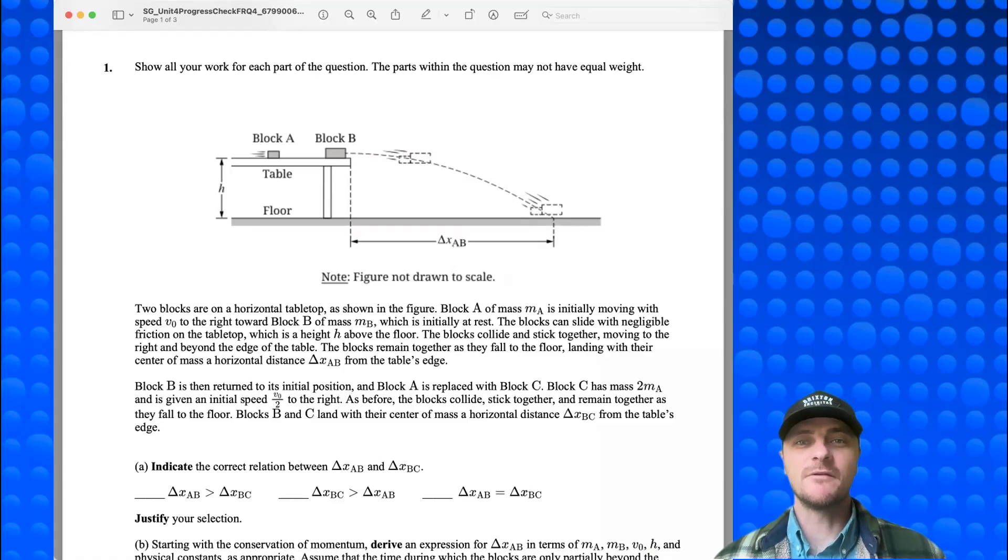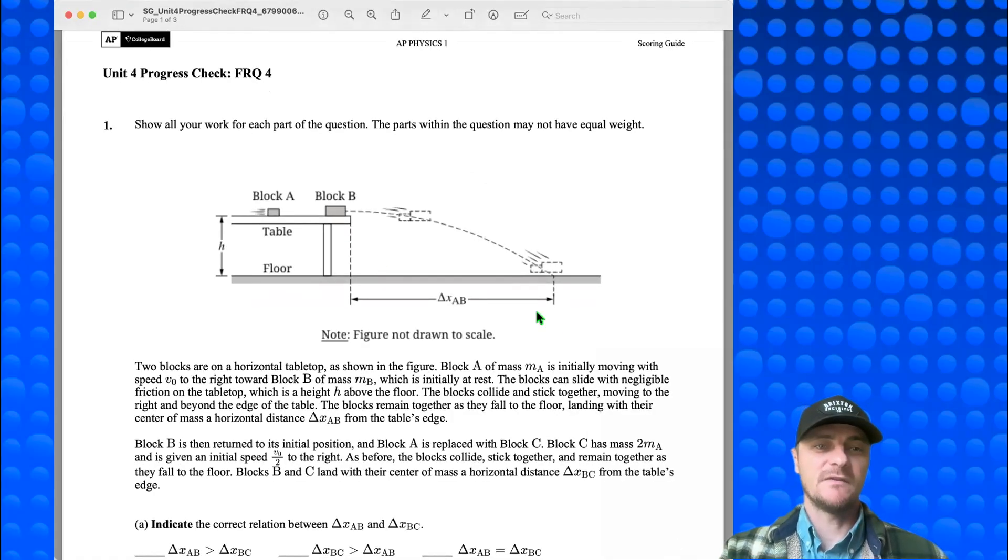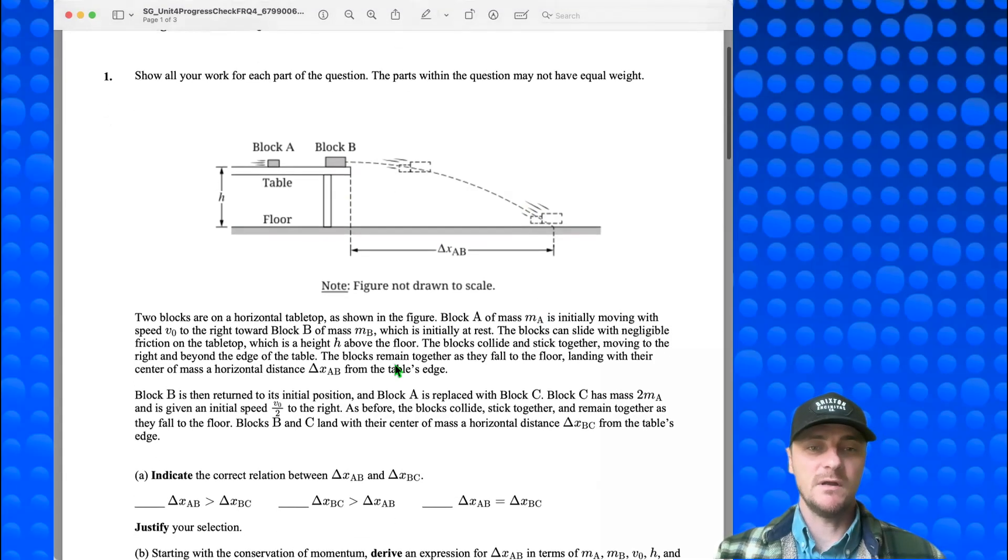Hey AP Physics students, Mr. Heinrich here, and we're looking at our last FRQ for Unit 4. So we've got this block A hitting block B, they collide and stick, and they take off off the table, and they achieve this distance, delta XAB. So what's going on?